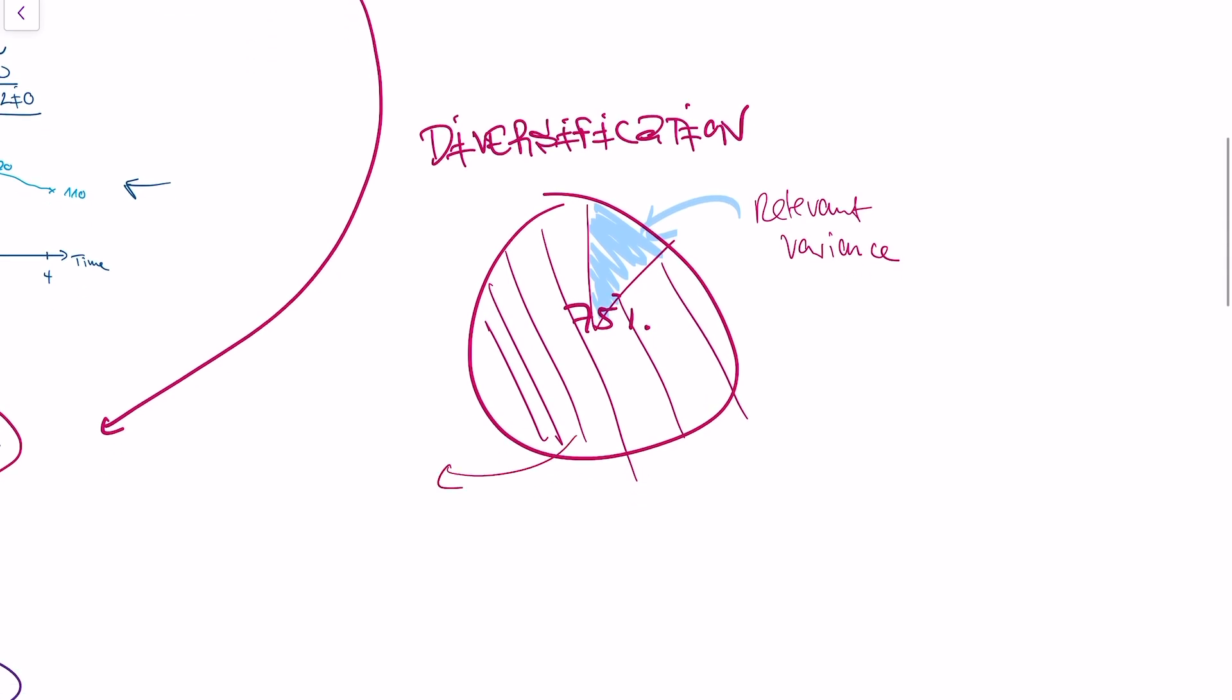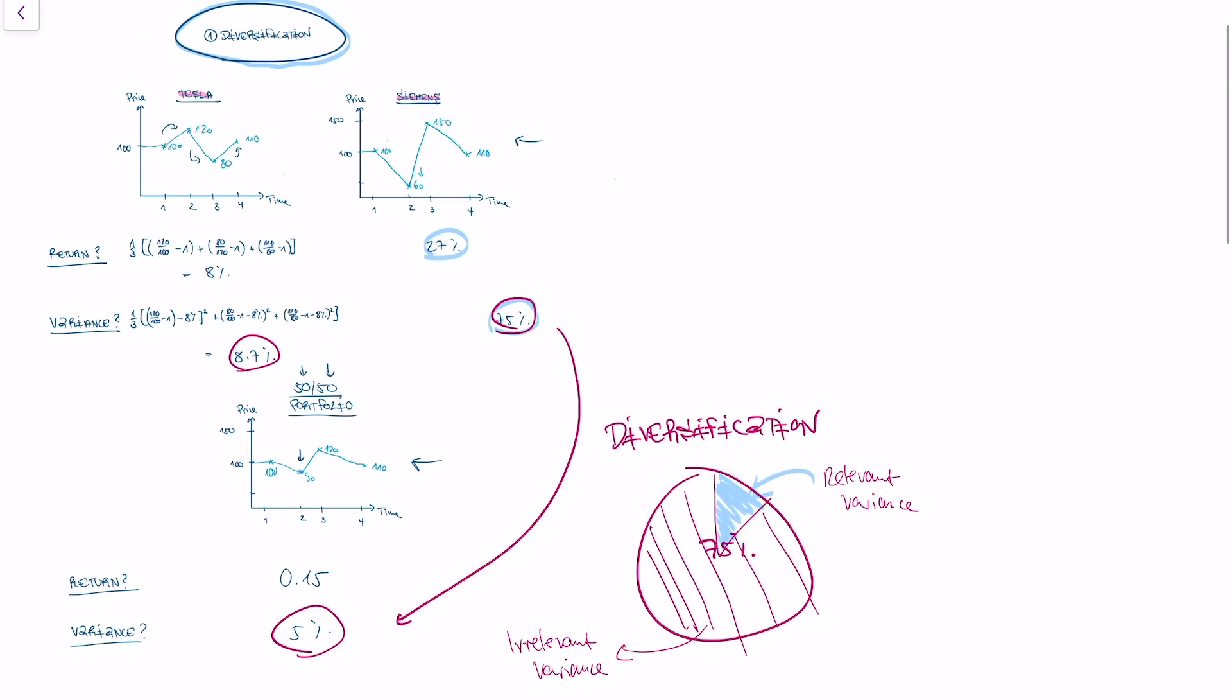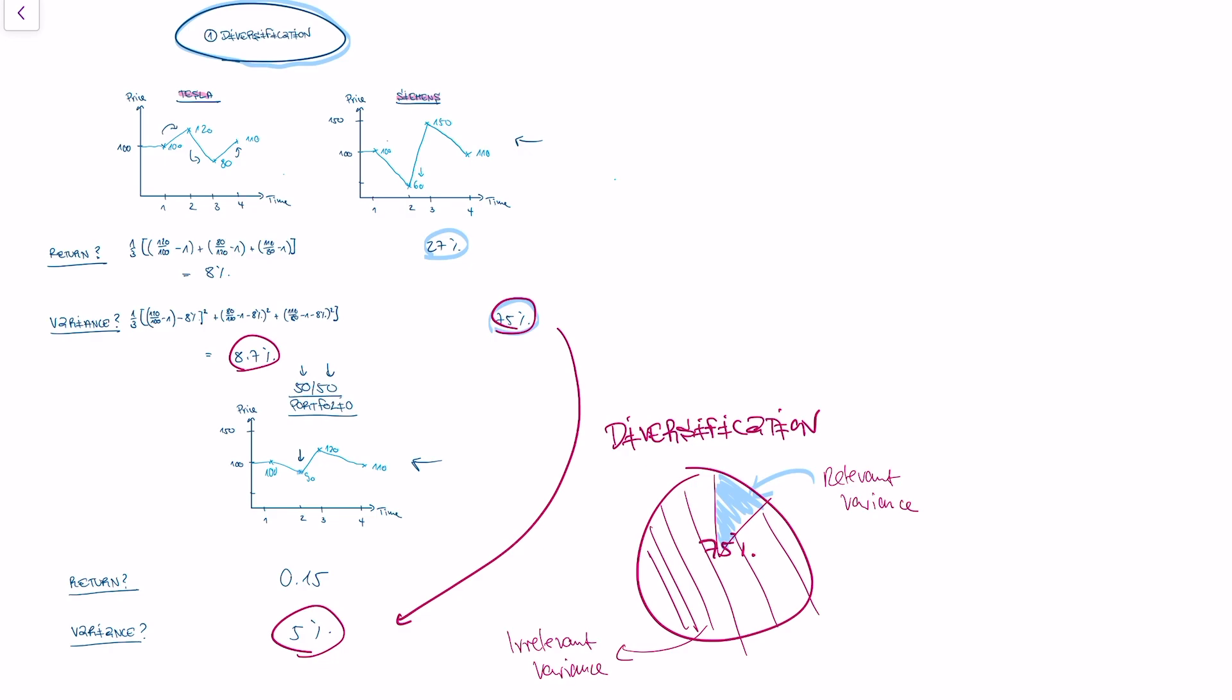That's the part of the variance that is not absorbed by the Tesla stock. But there's also a lot of irrelevant variance, because this is the variance that is absorbed by the Tesla stock and does not contribute to the variance of the portfolio. And this is how we get from a stock with 75% variance to being part of a portfolio which only has 5% of variance. And this is key. So in a portfolio, not the entire variance of the stock matters, because a lot of the stock's variance can be absorbed by other stocks. And this is the basic idea that we will use in the Capital Asset Pricing Model.